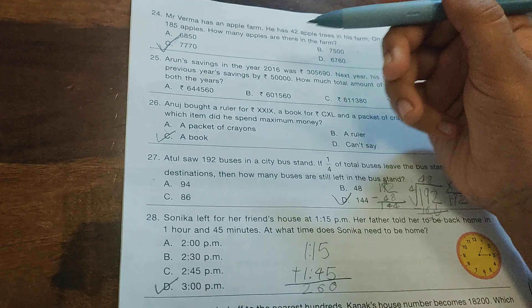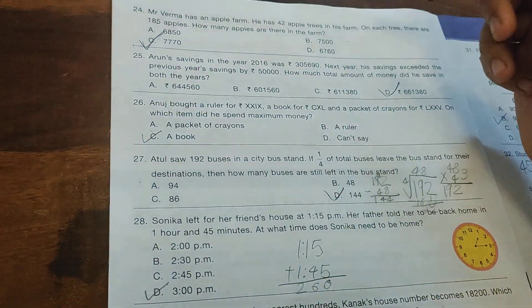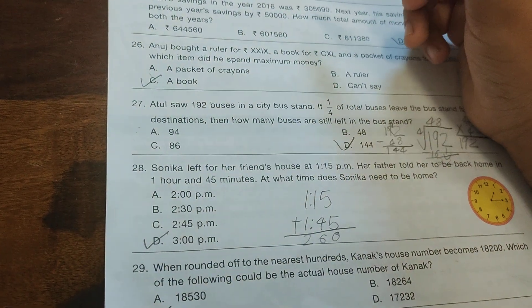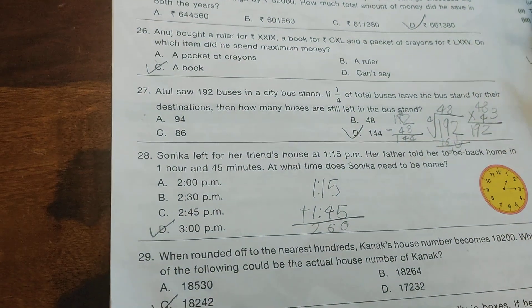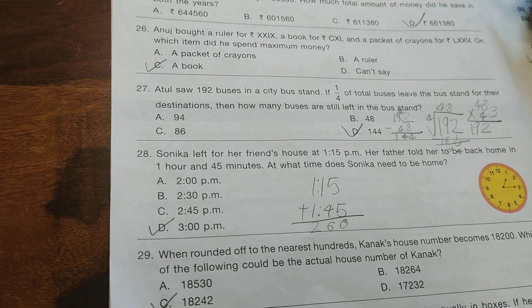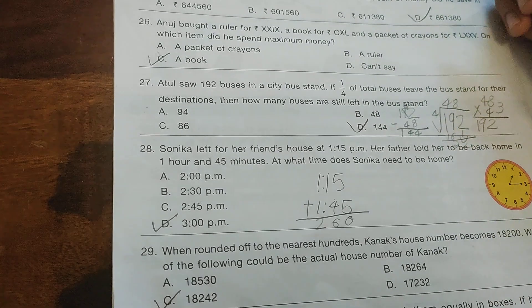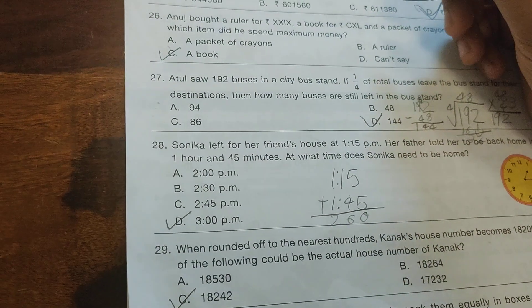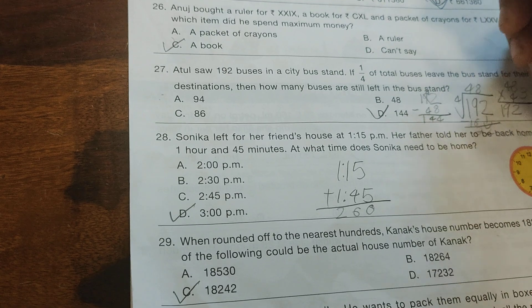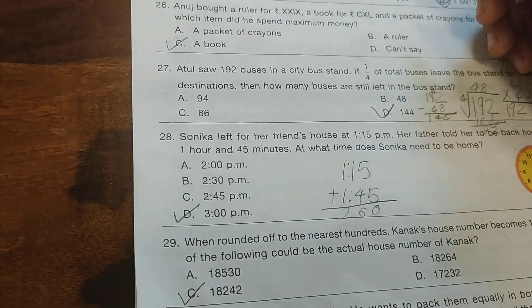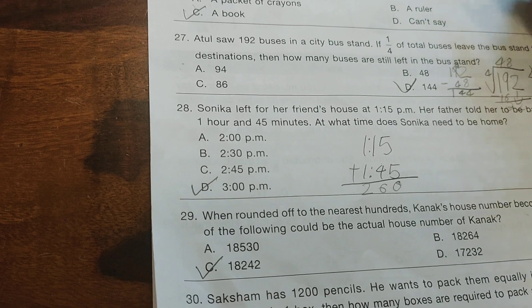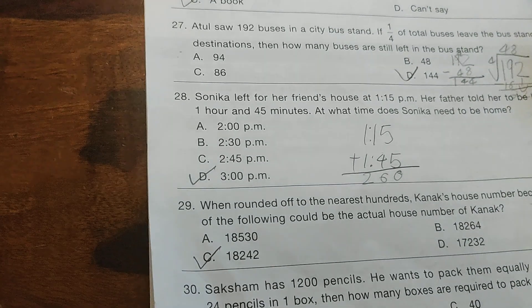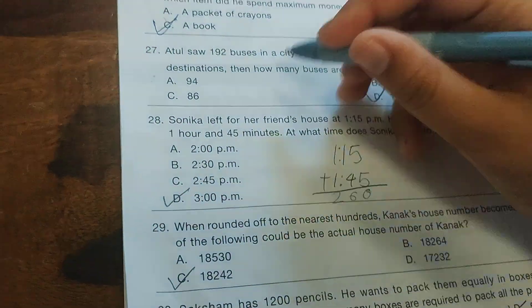Arun's savings in 2016 was 305,690 rupees. Next year, his savings exceeded the previous year by 50,000. What total amount did he save in both years? Option is 661,380. Ankit bought a ruler for XXIX rupees (29 rupees), a book for CXL rupees (140 rupees), and a packet of grams for LXXV rupees (75 rupees).